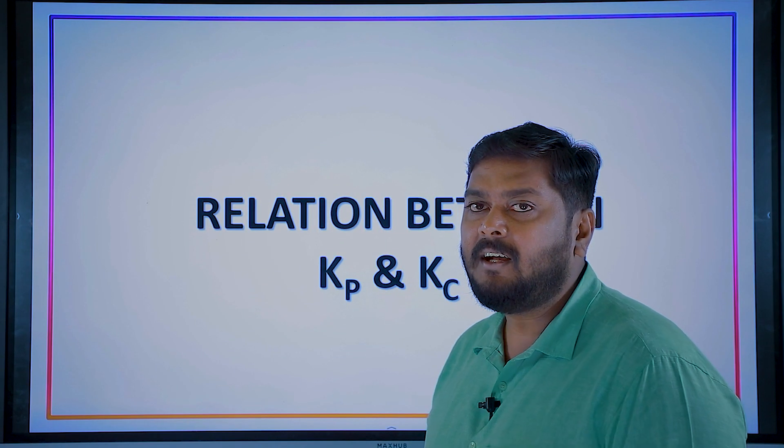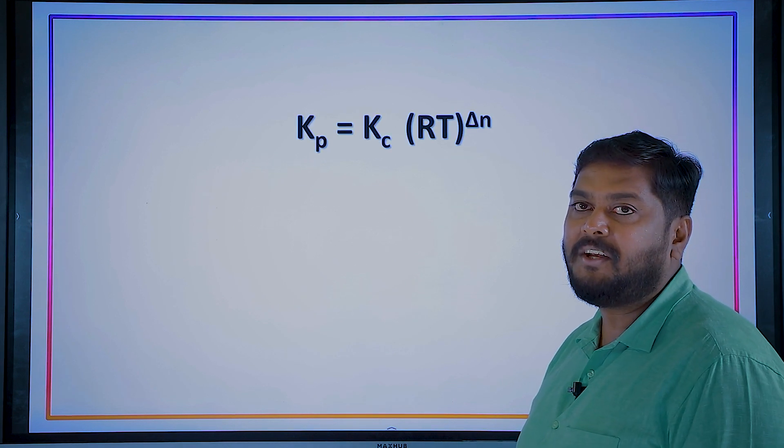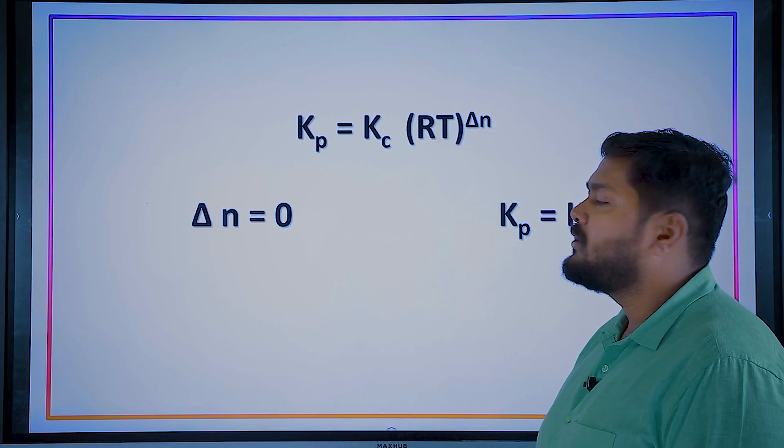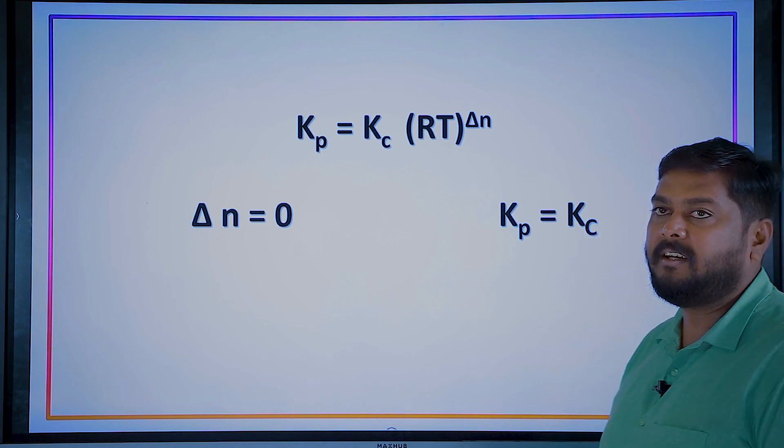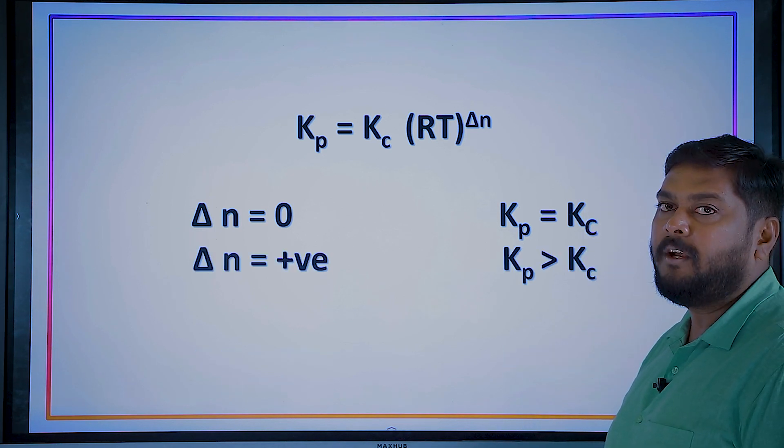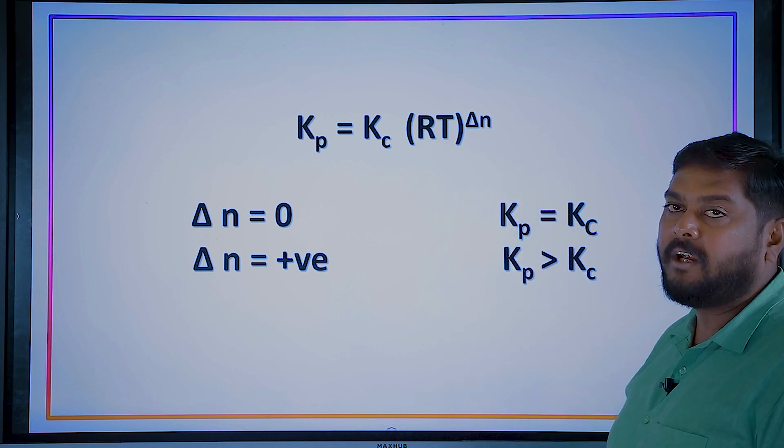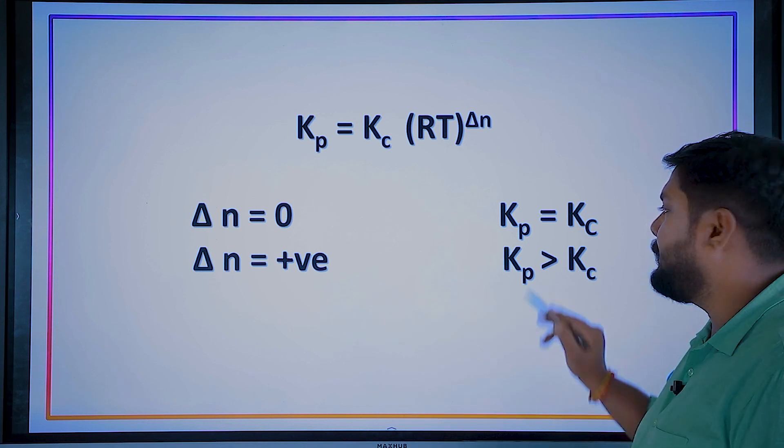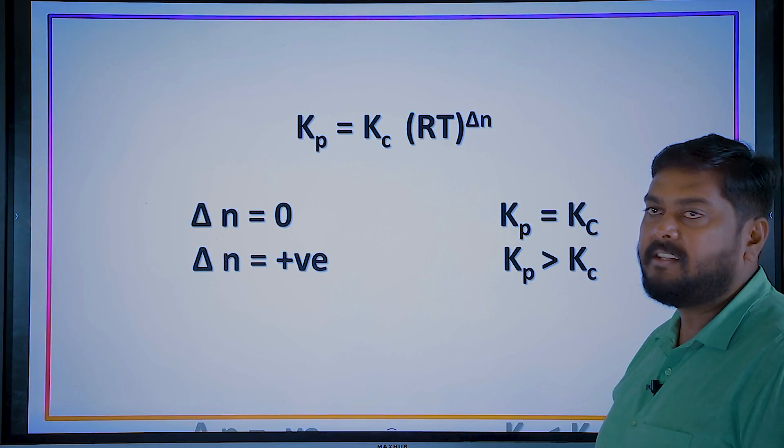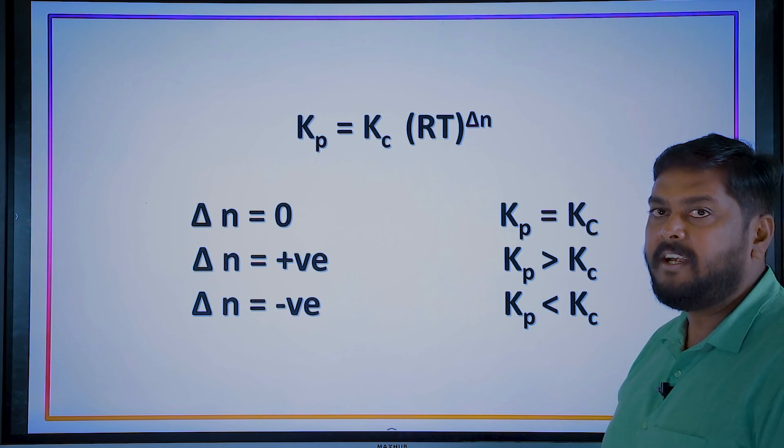You know the formula for Kp and Kc: Kp equals Kc times RT to the power delta n. Delta n will play an important role. Based on Kp-Kc relationship: when delta n is zero, Kp will equal Kc because RT to the power zero equals one. When delta n is positive, Kp will be more than Kc. When delta n is negative, Kp will be less than Kc.